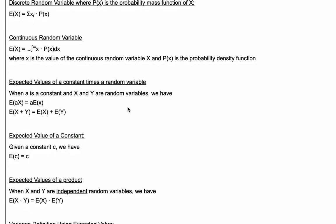What about a continuous random variable? The expected value of the random variable X is the integral from negative infinity to infinity of x times P(x) dx, where x is the value of the continuous random variable X and P(x) is the probability density function.